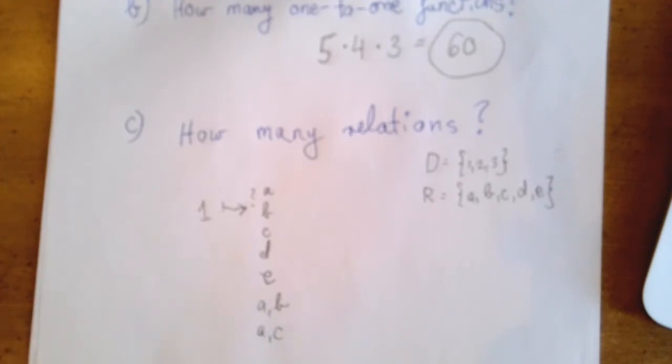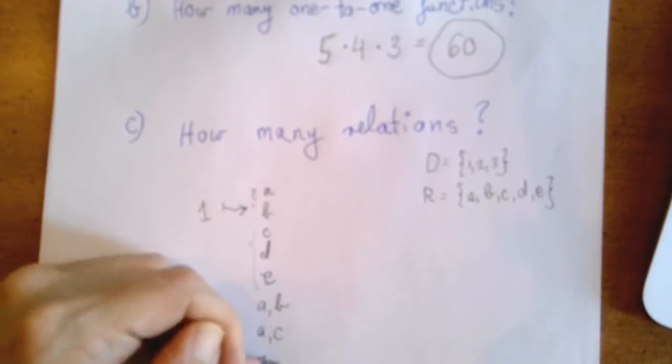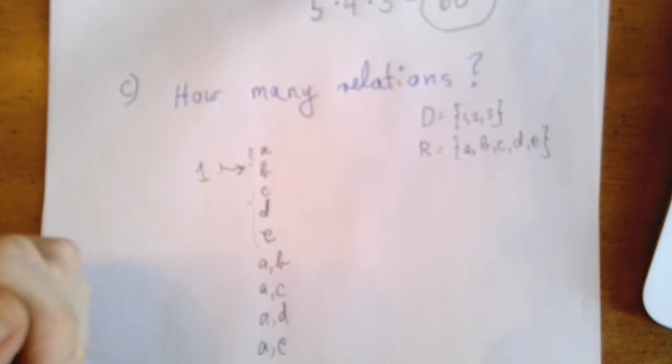So what are we counting here? If we would be listing A, B, and A, C, and then what's next? A, D. What are we counting when we go A, B, A, C, A, D, A, E? We're counting subsets.